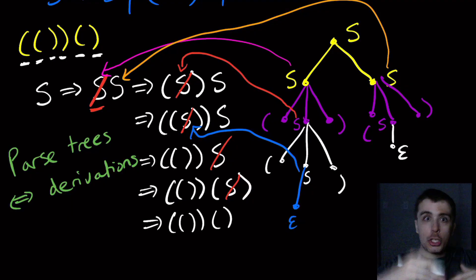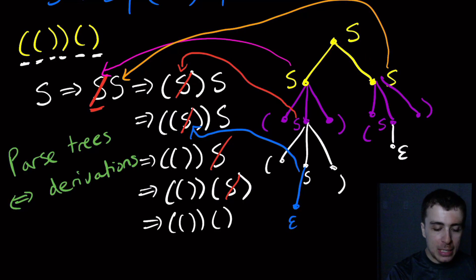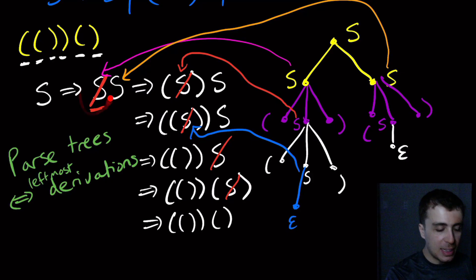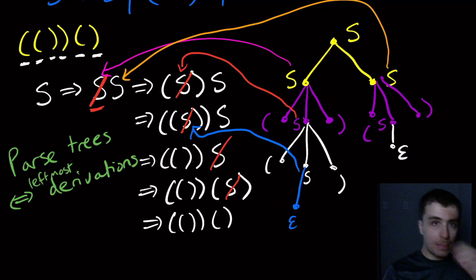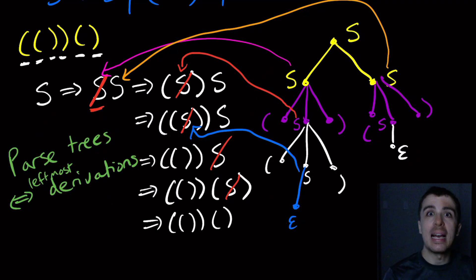If you have a derivation for some string, you can convert it into a parse tree by doing the same procedure we did here - whenever you apply a rule, you put children underneath the variable with the stuff you replaced it with. If you have a parse tree, it turns out you can have multiple different derivations, because it's context-free - we could have worked with this S first instead of that one since they're completely independent. So it turns out parse trees are equivalent to leftmost derivations. Leftmost means we always replace the leftmost variable in the derivation, corresponding to the leftmost variable in the parse tree. Without loss of generality, we can talk about parse trees instead of derivations, which makes proving things a lot easier because it's a lot more visual.